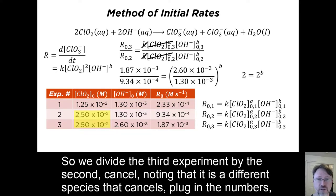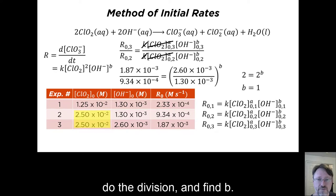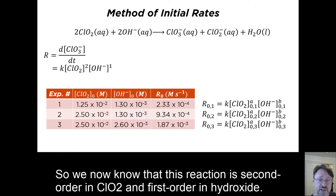Plug in the numbers, do the division, and find B. So now we know this reaction is second order in ClO2, and first order in hydroxide.